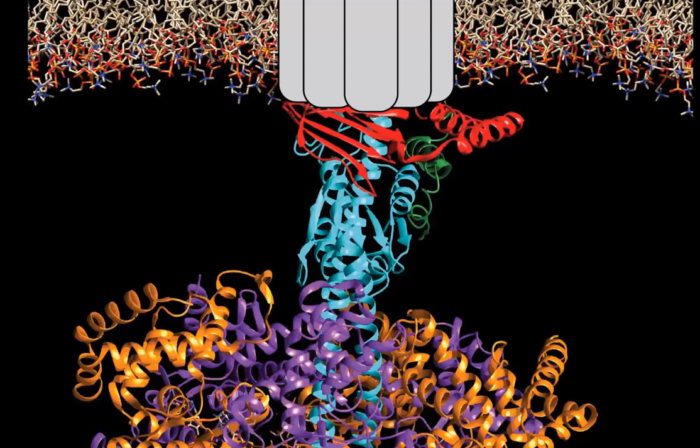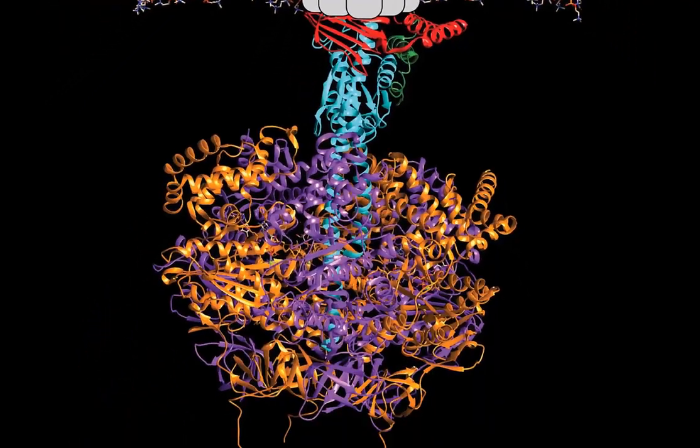As this ring rotates due to protons being transported across the membrane, it will rotate the blue subunit called the gamma subunit of the ATPase. It's the rotation of this gamma subunit, in response to the rotation of the C ring, that ultimately drives ATP synthesis. So let's look at the rest of the protein to understand how that happens.